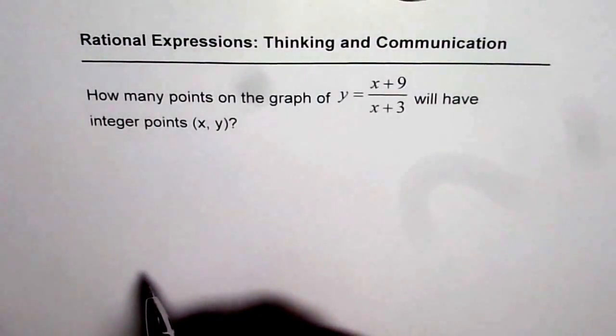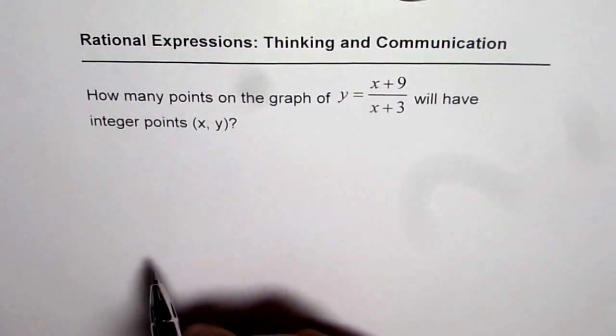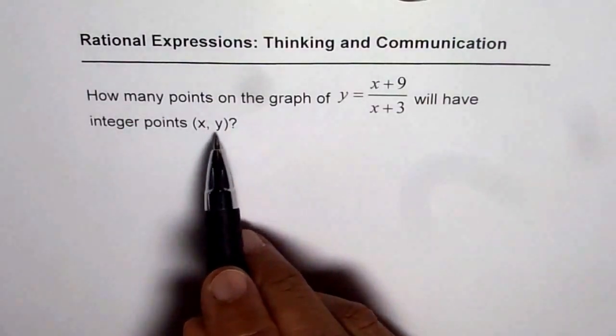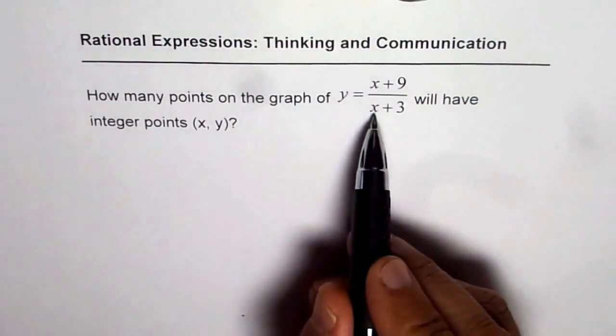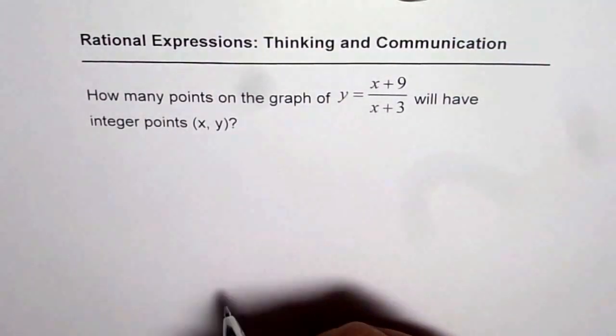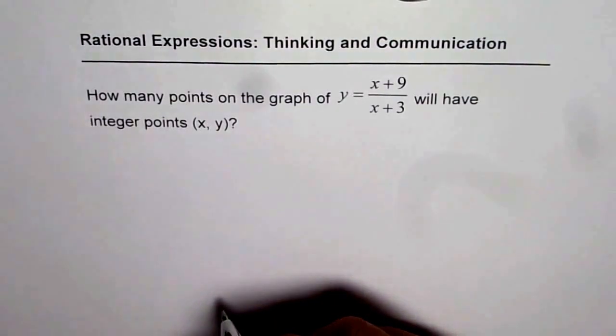Pause the video and solve the question. When we say x and y both are integers, we basically mean that we should select the integer values of x so that y is also an integer. That is what the question is. Now let us see how to solve it.